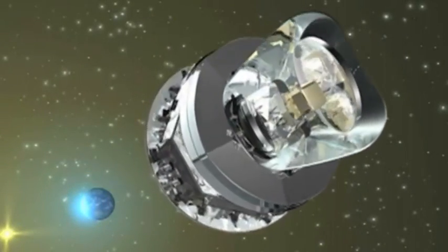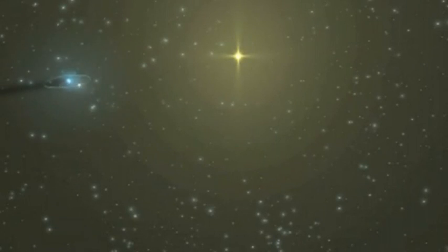Planck will be placed like Herschel in orbit around the L2 Lagrange point where it will orbit together with the Earth around our sun.